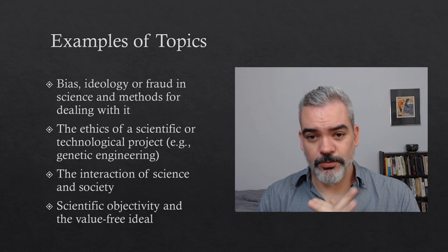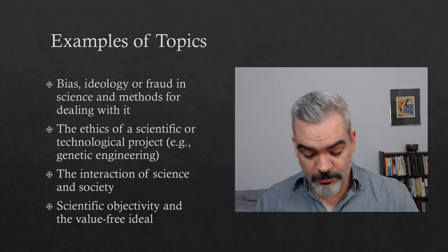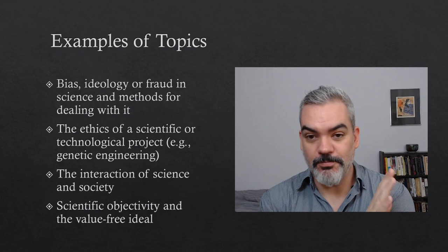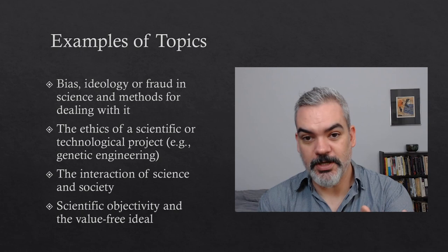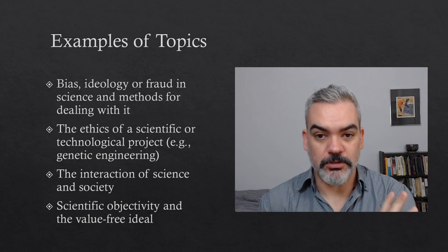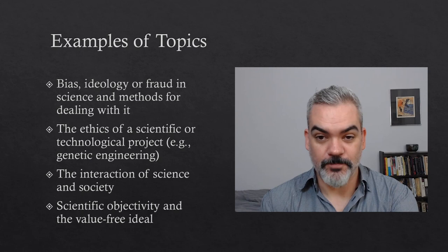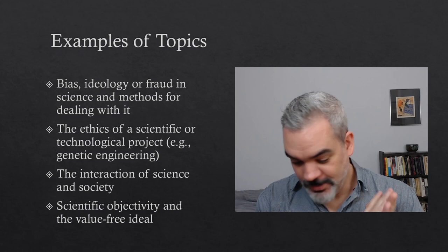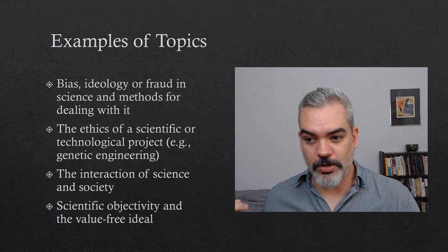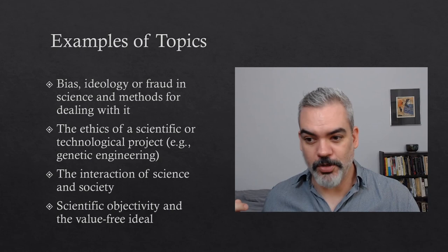If you want to get to the heart of this course — at least what we talked about for the first month — you might write about scientific objectivity and the value-free ideal. This is the question of how objective science is, especially in the sense of being free of values, and whether values play a serious role in guiding scientific research. There's a really rich literature on this, so if you want to get into this conversation there are lots of places to enter it. That would be extremely on topic for this course. There's loads more — I'm just trying to give you a sample; I would love for you to be creative with this.